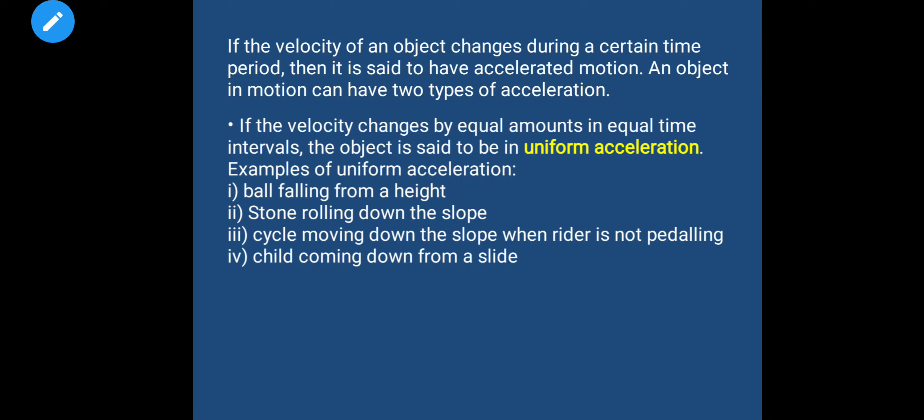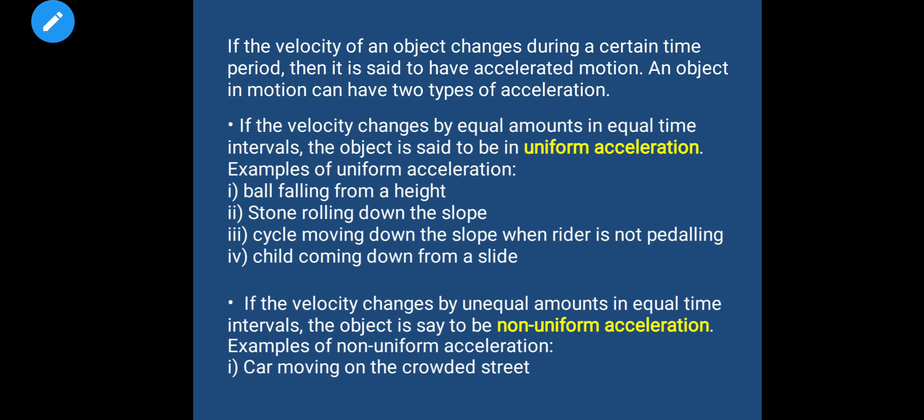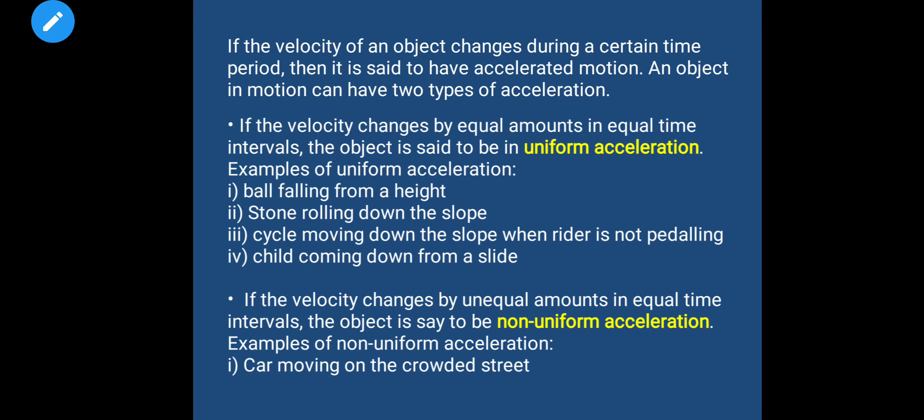Number two: if the velocity changes by unequal amounts in equal time intervals, the object is said to be in non-uniform acceleration. Example: a car moving on a crowded street. So here we finish the topic of acceleration. Thank you.